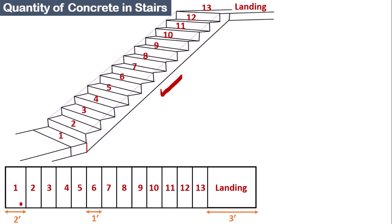Looking at the plan of the stair: the width of the first step is two feet, and all remaining steps (two through thirteen) have a tread width of one foot. The width of the landing is three feet, and the overall width of the stair is also three feet.